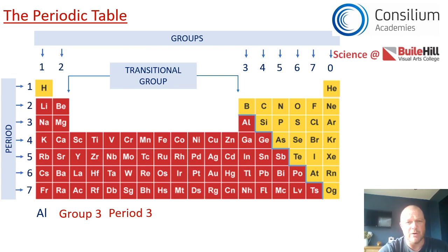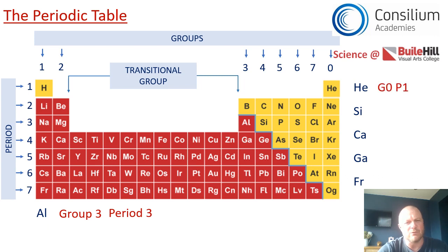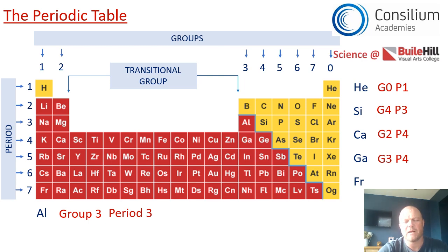Pause the video and have a go at locating the five elements on the right of the screen. Here are the answers: Helium is group zero, period one. Silicon is in group four, period three. Calcium is in group two, period four. Gallium is in group three, period four. And francium is in group one, period seven. Well done if you managed to get those right.